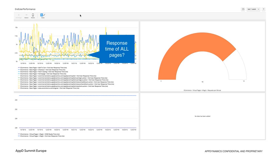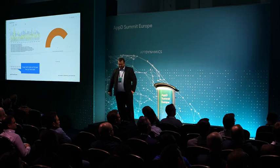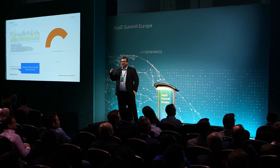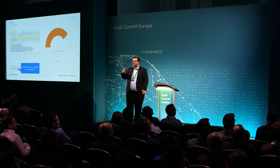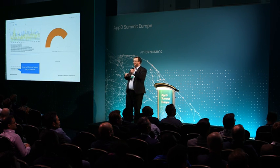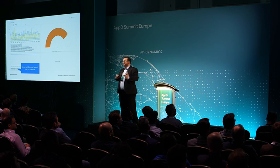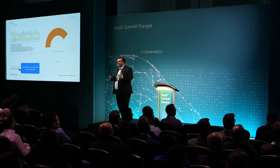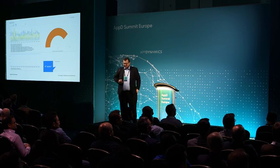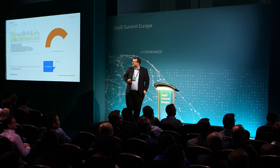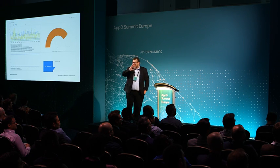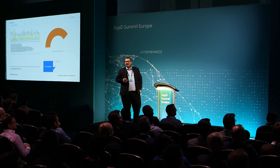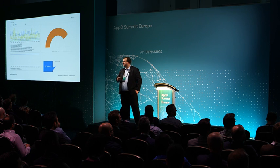I've no idea what that graph is showing me. It's got too much stuff on it. We've got actually two metrics here which are so far apart on the scale they just look like flat lines, which is pointless. And someone's deleted a business transaction here and it's just disappeared — that's a great sign that no one's using the dashboard.